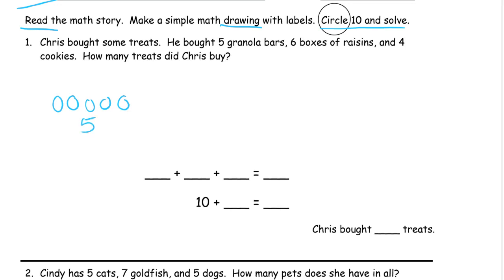I'll label it five and a G up here for granola bar. One, two, three, four, five, six. That's six boxes of raisins, and cookies. One, two, three, four. These are cookies, and there's four of those.